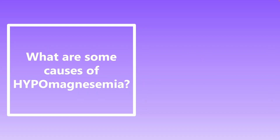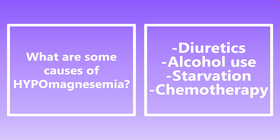What are some causes of hypomagnesemia? Important causes include diuretic use, alcohol use, starvation, and chemotherapy. Notably for alcohol use, patients with chronic alcohol use have poor nutrition and may also be deficient in thiamine and folic acid, which is why we frequently supplement these vitamins and minerals when alcoholic patients are admitted to the hospital.